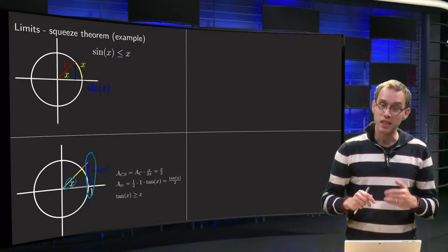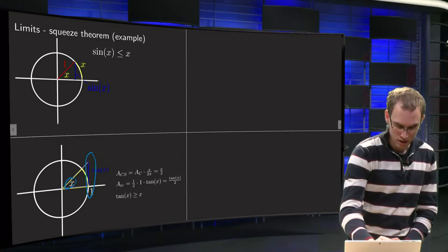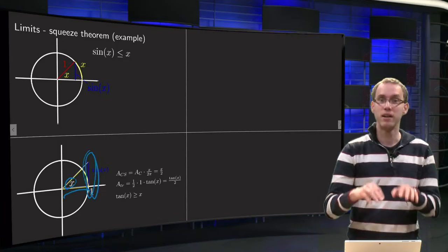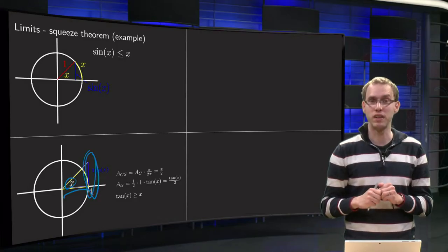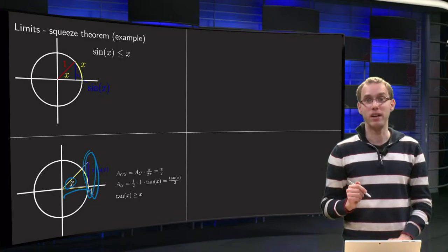And then we know that that is the tangent of x because the tangent of x equals the blue line divided by the 1 equals the tangent of x. And now we want to show that this tangent of x is bigger or equal than x.